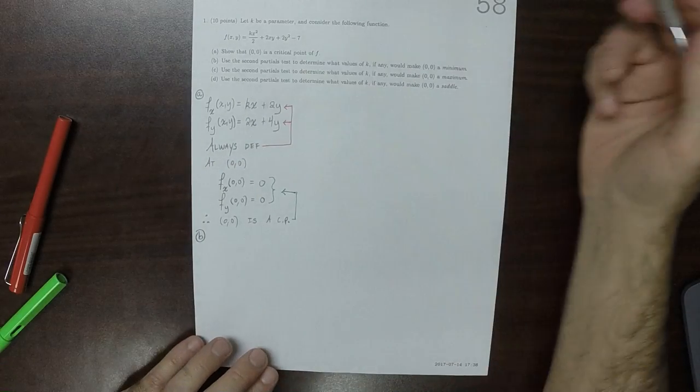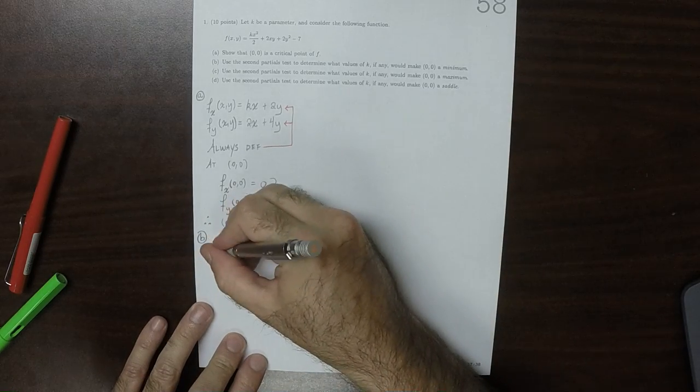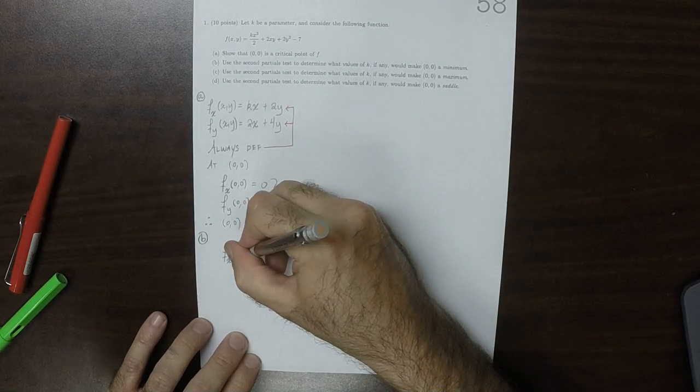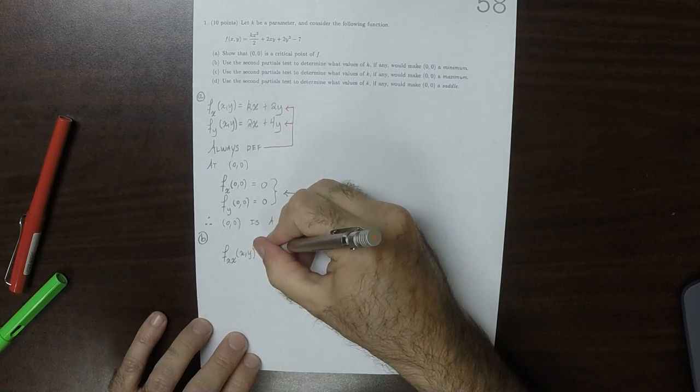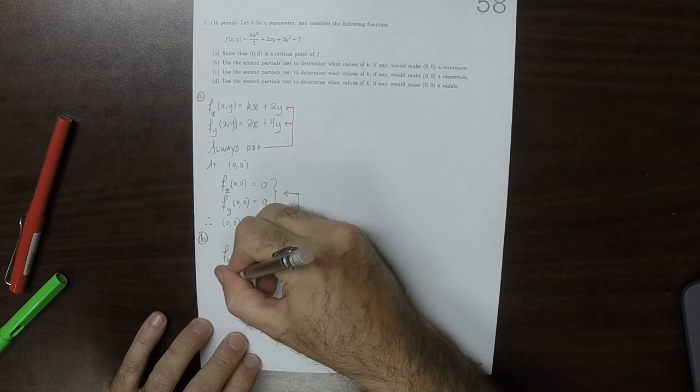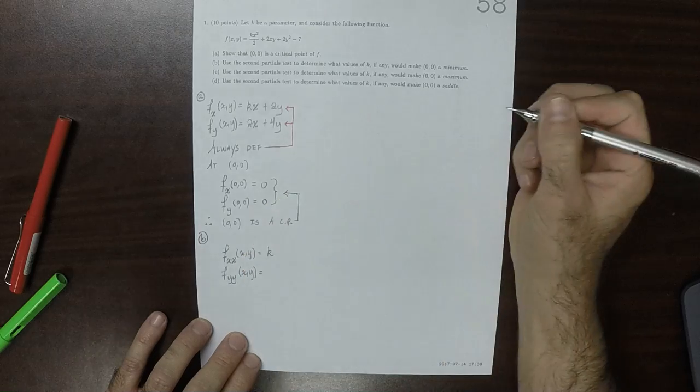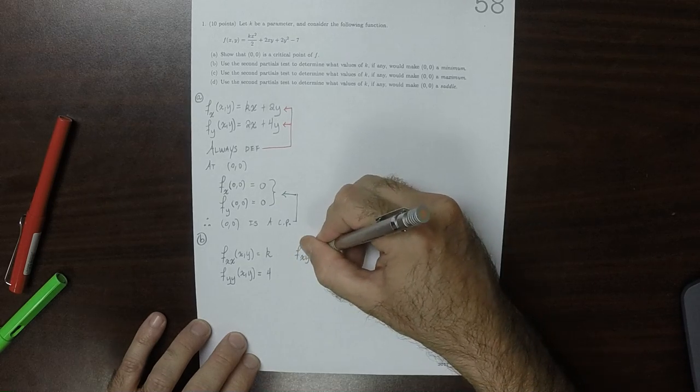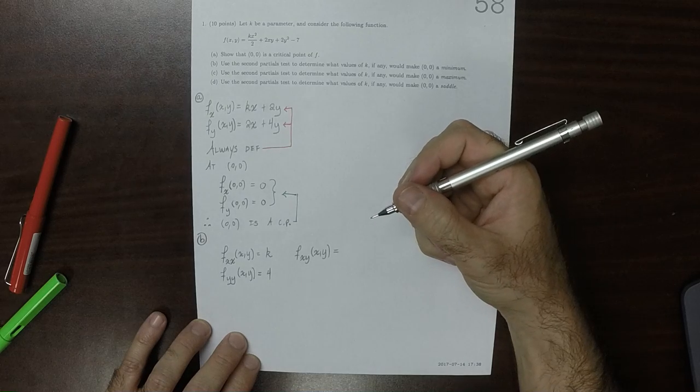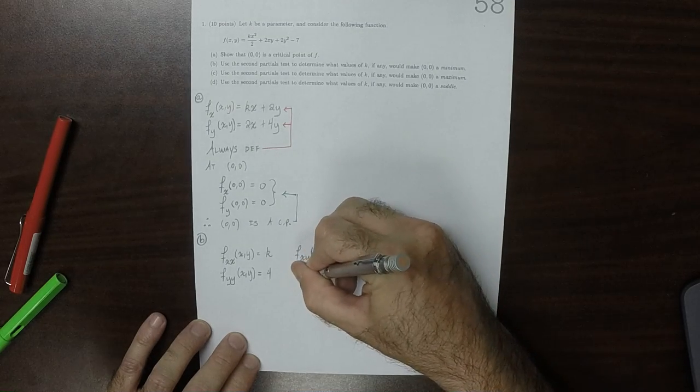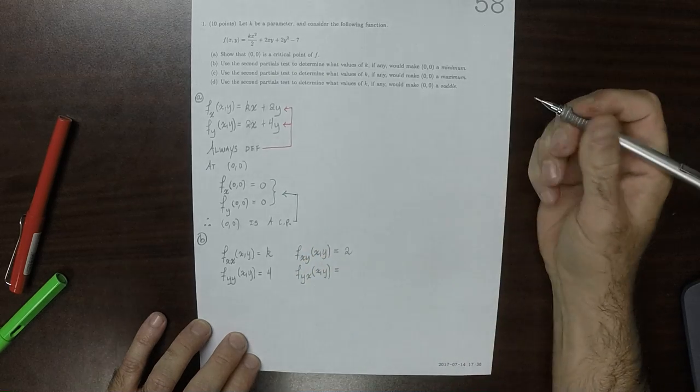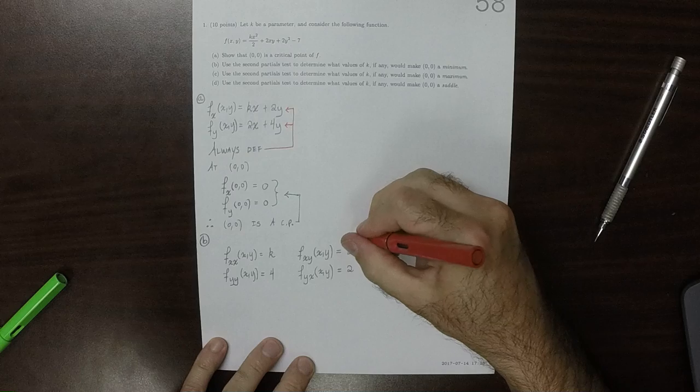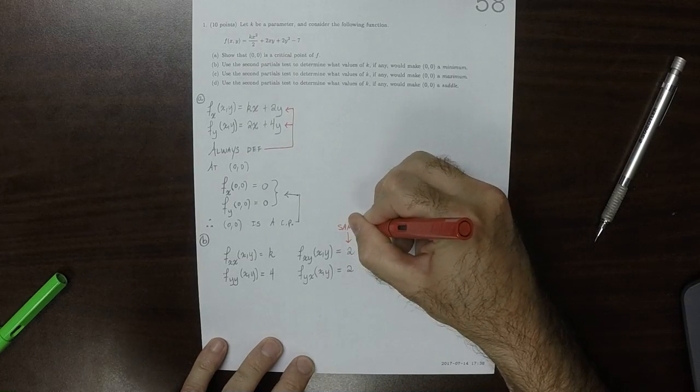Okay, so for parts b, c, and d, we'll need the second partials. So the x, x partial is k. The y, y partial is 4. The x, y partial, which is to say first x, then y, is 2. And the y, x partial, which is to say first y, then x, is also 2. So these are the same. So that's good.